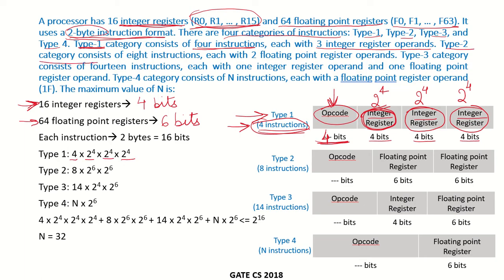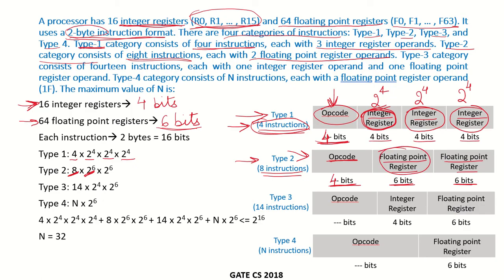Type 2 consists of 8 instructions, each with 2 floating point register operands. The format has an opcode and 2 floating point register operands, each requiring 6 bits, totaling 12 bits. The remaining 4 bits go to the opcode, which can easily encode 8 instructions. The total combinations for Type 2 are 8 × 2⁶ × 2⁶.